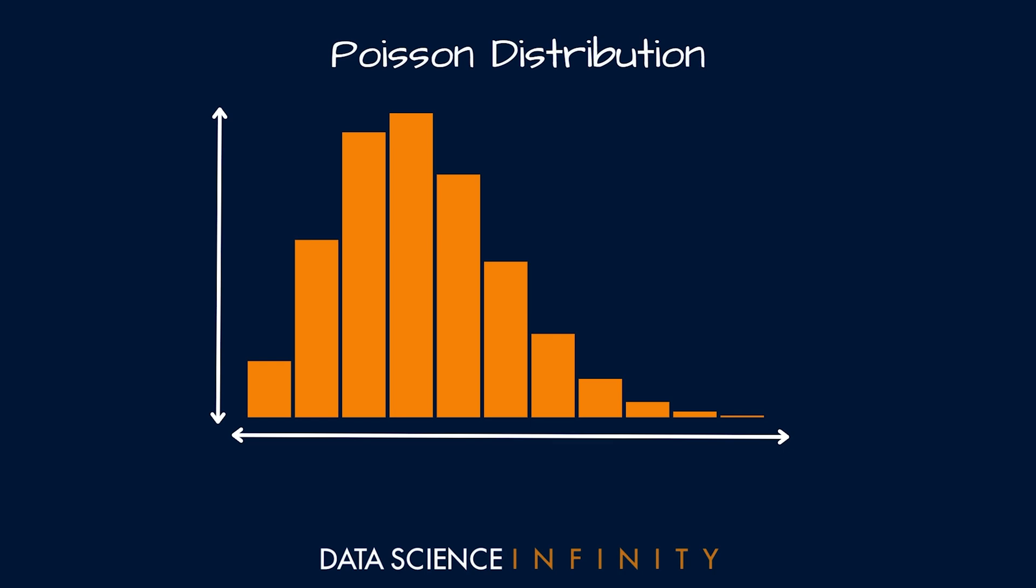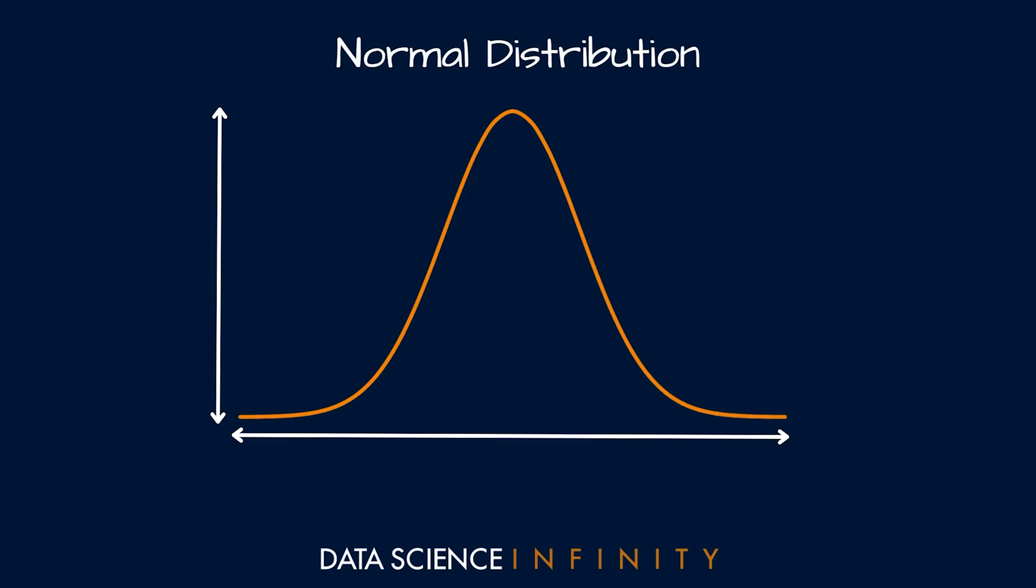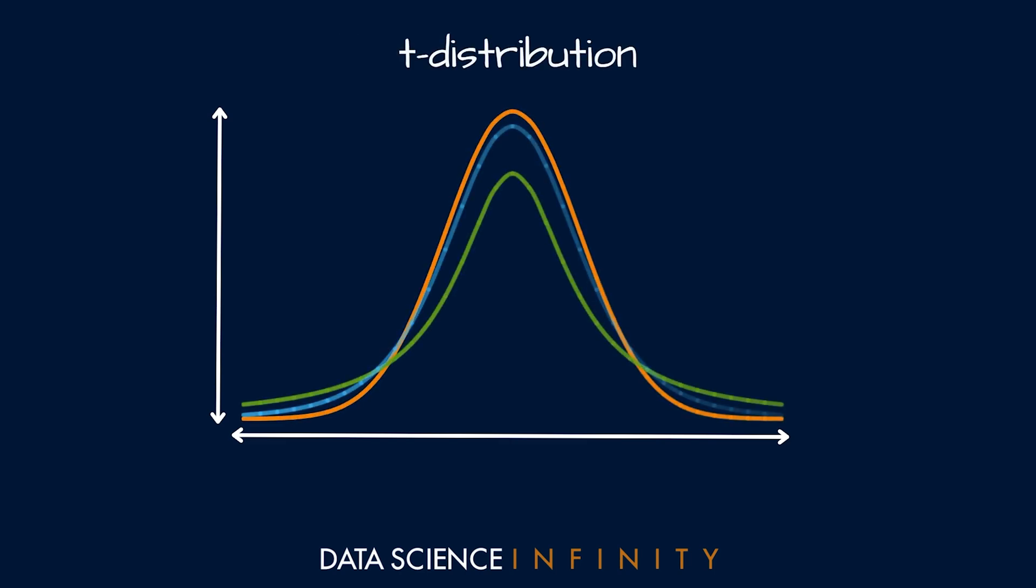We have already discussed the key features of the normal distribution, so what about this other one that looked kind of similar and that I said was called the t-distribution? Well, a t-distribution is actually at its core very similar to the normal distribution. Just like a normal distribution, it is symmetrical around the mean and the breadth of the curve is based on the deviation or the variance that exists within the data.